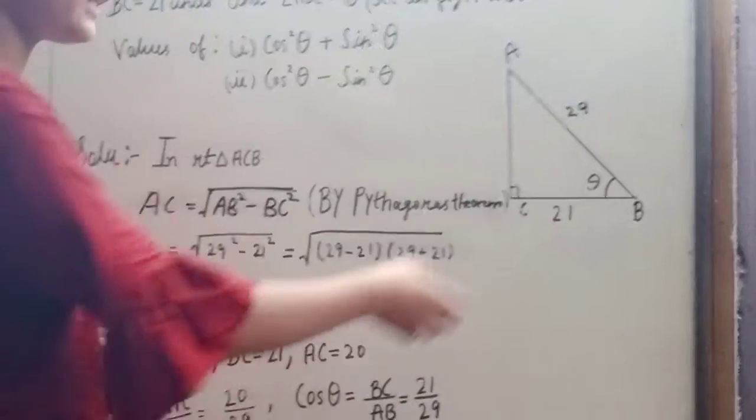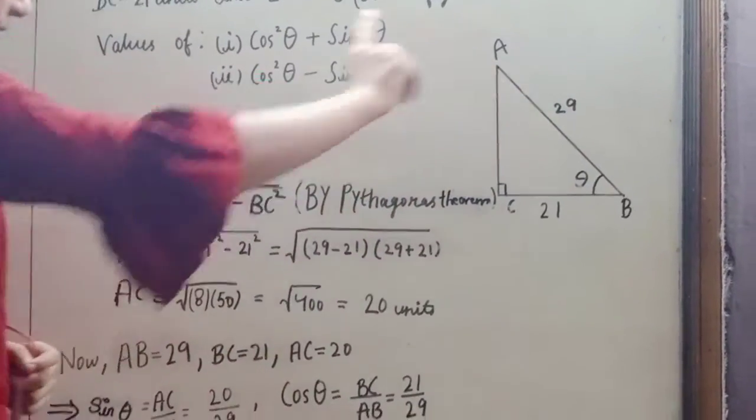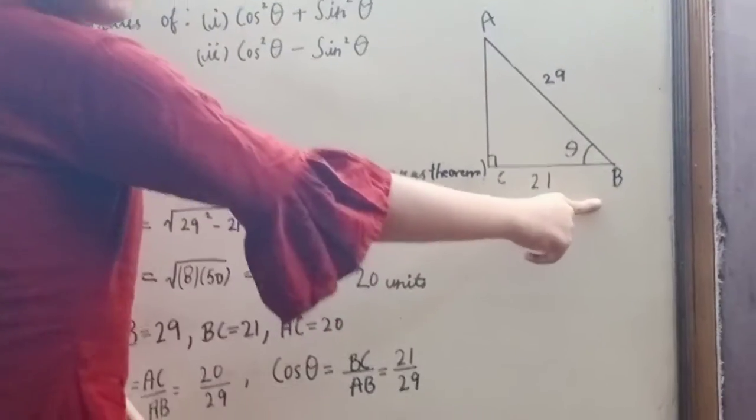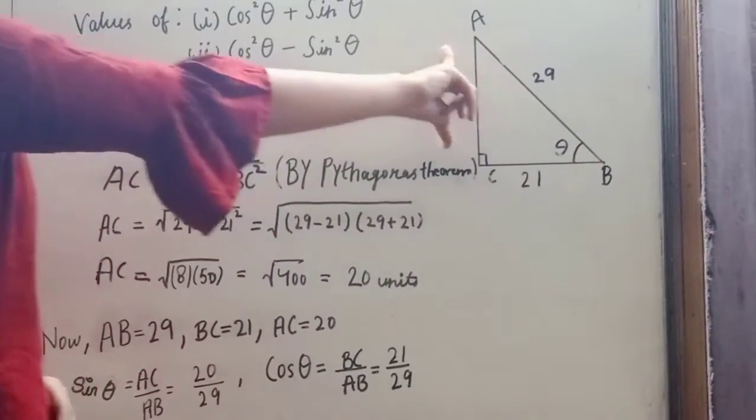We get AC is equal to 20 units. Now AB is equal to 29 units, BC is equal to 21 units and AC is equal to 20 units.